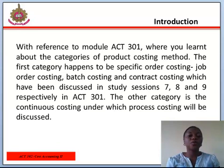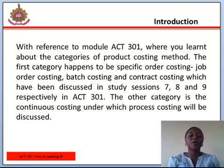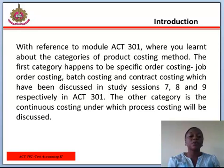With reference to module ACT 301, where you learned about the categories of product costing method, the first category is Specific Order Costing, which includes Job Order Costing, Batch Costing, and Contract Costing, fully discussed in study sessions 7, 8, and 9 respectively in ACT 301. The other category is Continuous Costing, under which Process Costing will be discussed.